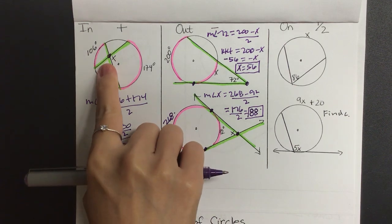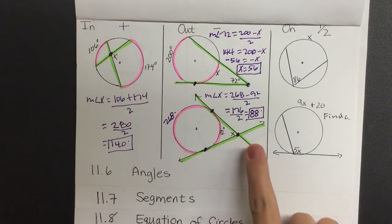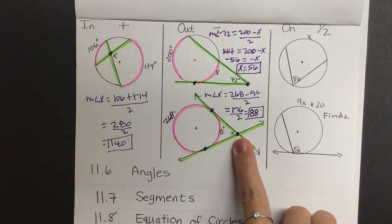So again, if it's in the inside you add and divide it by 2. If it's on the outside you subtract and divide it by 2.